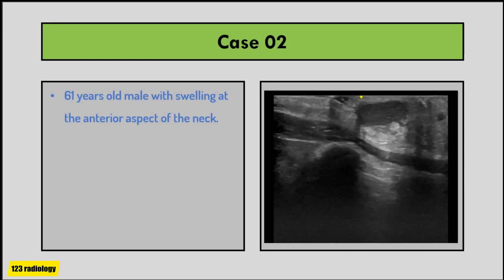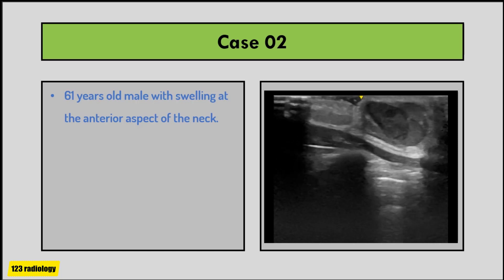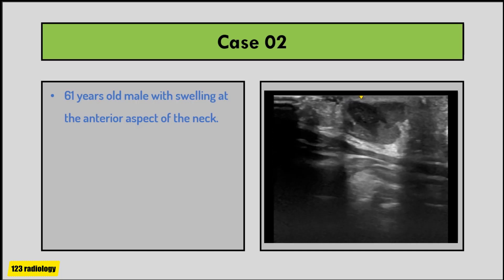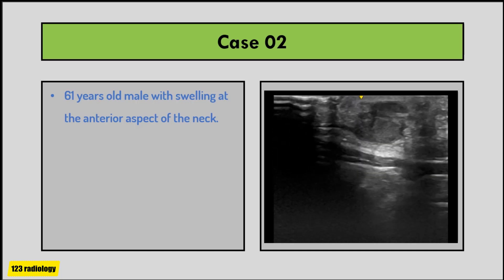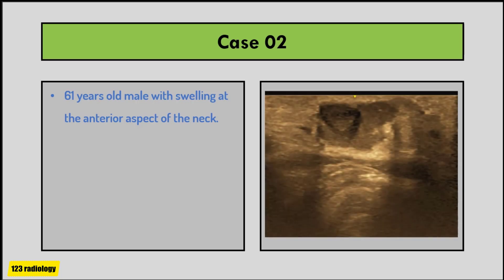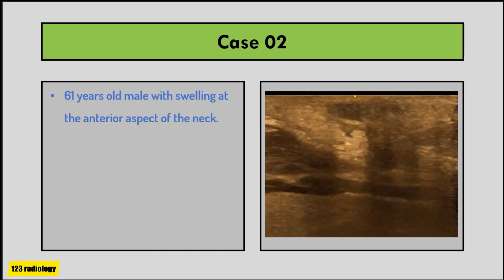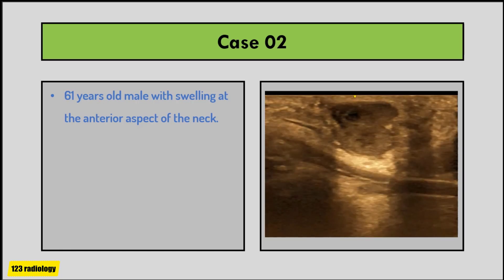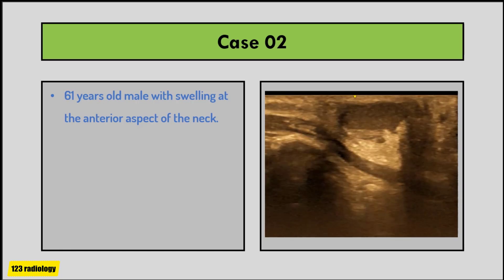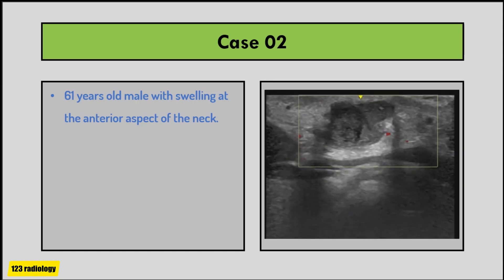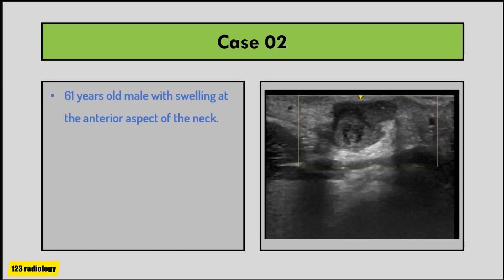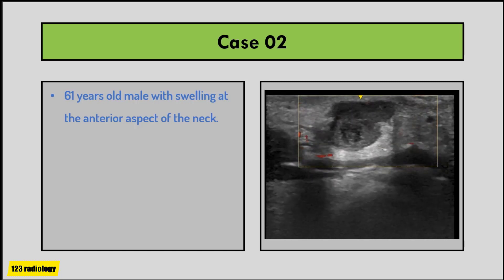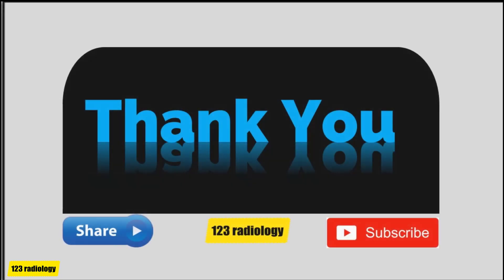Case number two: a 61-year-old male with swelling at the anterior aspect of the neck. In these cine clips there is a lobulated-shaped lesion with dermal attachment located in the subcutaneous layer, showing a mixed hyper- and hypoechoic echo pattern with posterior acoustic enhancement. On color Doppler examination there is no internal flow. These ultrasound features are highly suggestive of epidermal inclusion cyst, and the diagnosis was confirmed by histopathology.